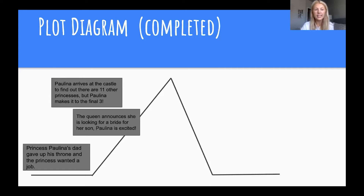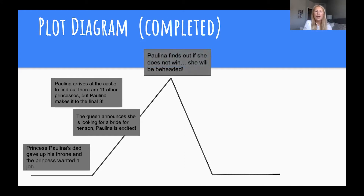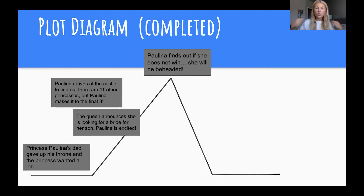Our climax is Paulina finds out that if she does not win, she will be beheaded. This part of the story was definitely the most worrisome for Paulina — she was frantic, thinking if she didn't win this competition she was going to be beheaded. So she starts to freak out a little bit and realizes she has to try harder and has to win.